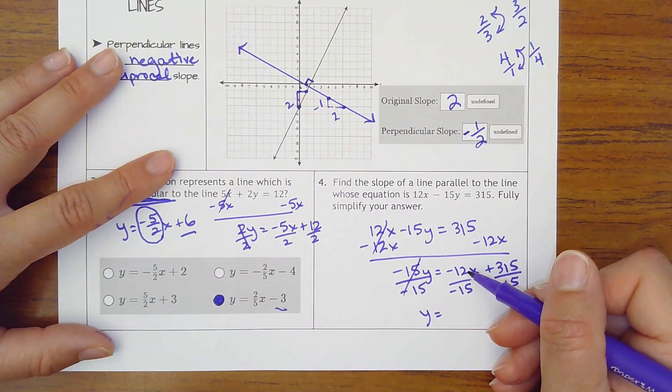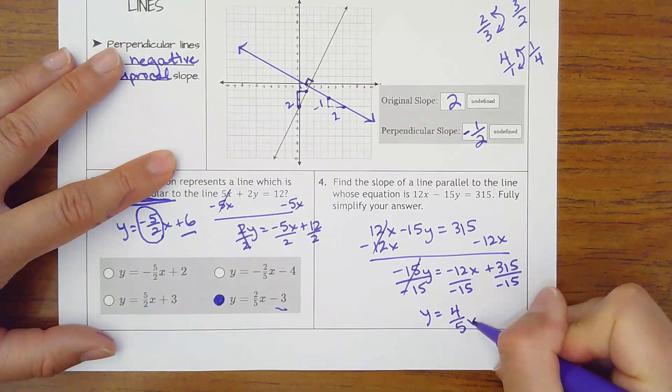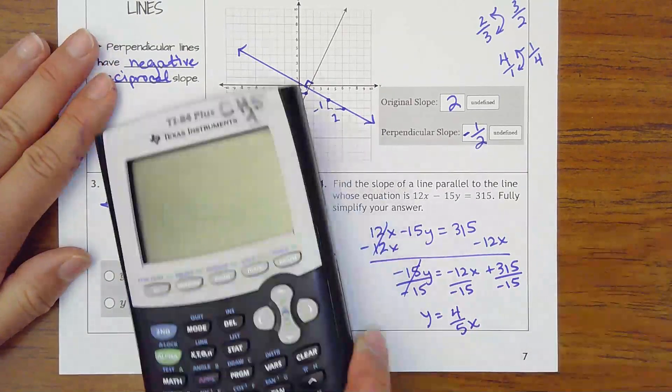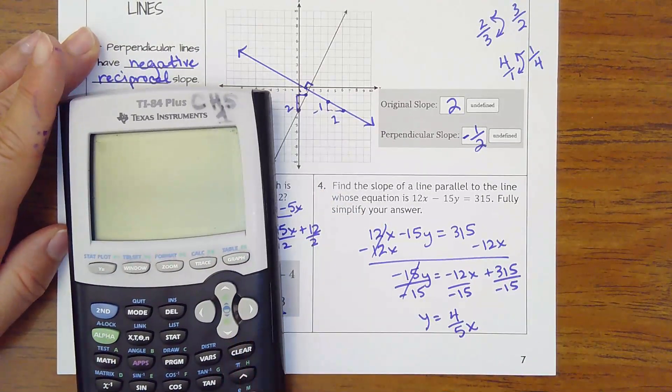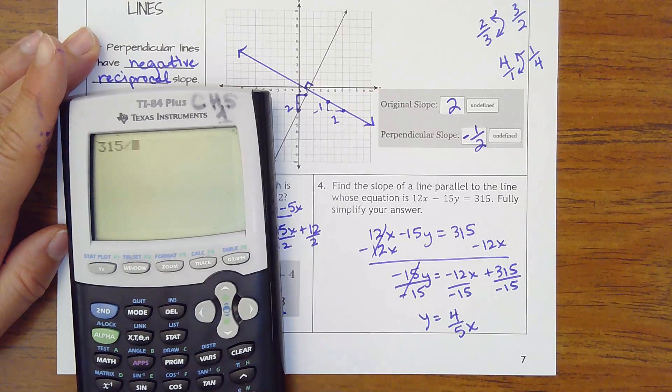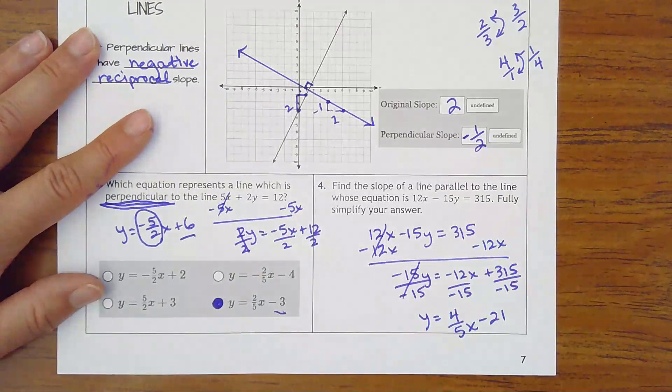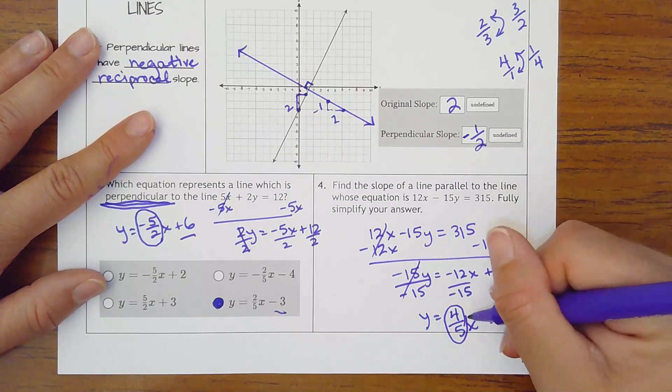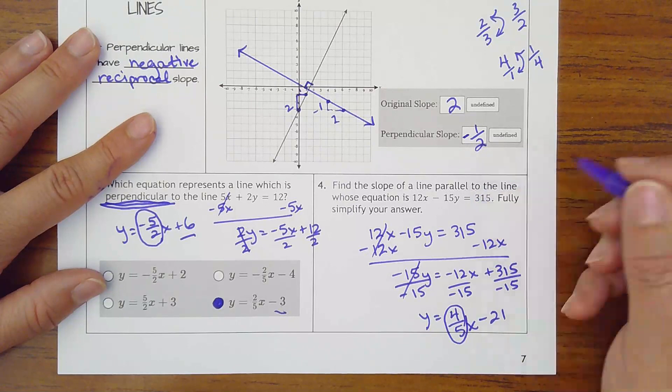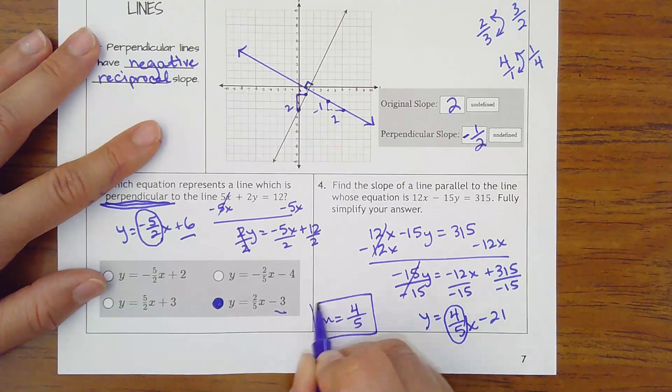Simplify this. You can divide out a 3. So that would be 4 fifths and it would become positive. I don't care really what that is, but I will go ahead and do it anyway. Like 315 divided by negative 15 is negative 21. But again, all I want is the slope. So if this line, this is all the same line, has a slope of 4 fifths,